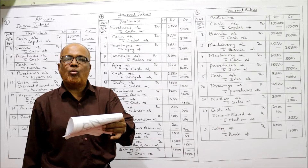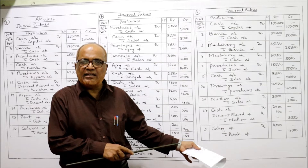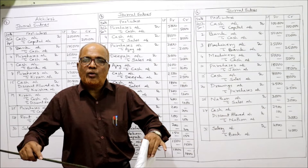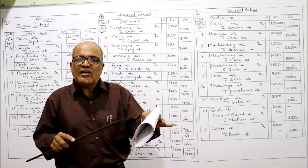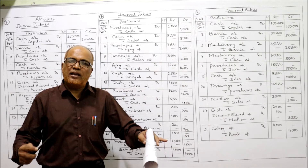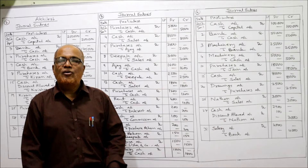Last one: salary paid to the manager Mr. Mohan, paid by check. We are not concerned with the person's name in the journal entry — the person's name can be written in the narration. What we are paying is salary — salary is an expense, so salary account should be debited. We are issuing a check, so to bank. Entry: salary account debit to bank. In narration: being the salary paid to the manager Mr. Mohan by check. That completes problem number four.